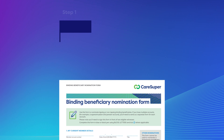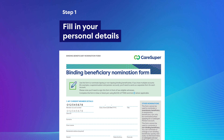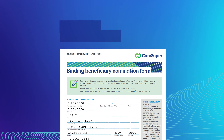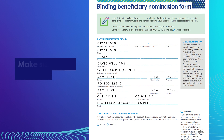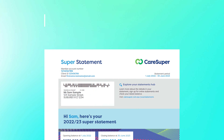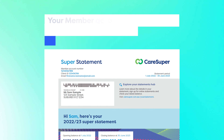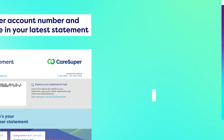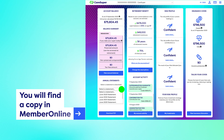Step 1: Enter your current member details, being careful not to miss any fields. Make sure you fill out all the fields including your date of birth and title. To find your member account number and client ID, see your latest annual statement. You'll find a copy of your latest statement in member online.